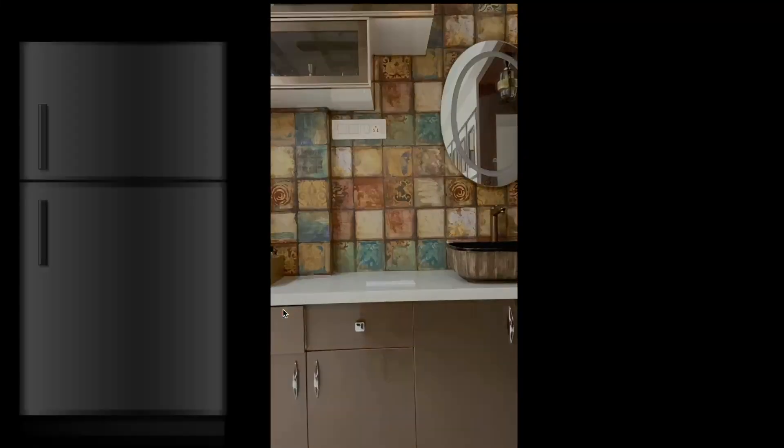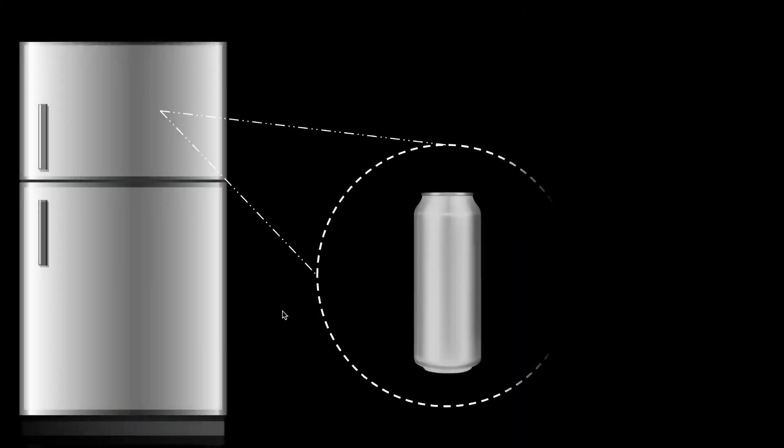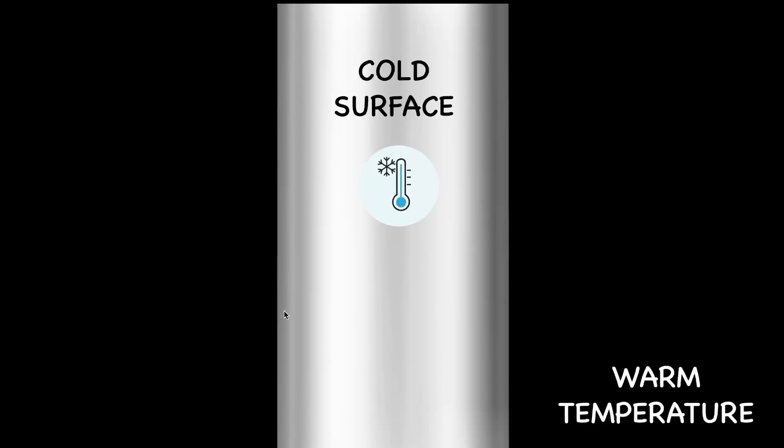Where did the can come from? It was kept inside the fridge. Because the can has come from the fridge, the surface of the can is pretty cold, and when you compare it to the surroundings, we know that the surrounding is relatively warmer—probably room temperature, which is about 25-27 degrees—but the surface of the can would be much colder, maybe 2 or 1 degrees, anything varying in that range.